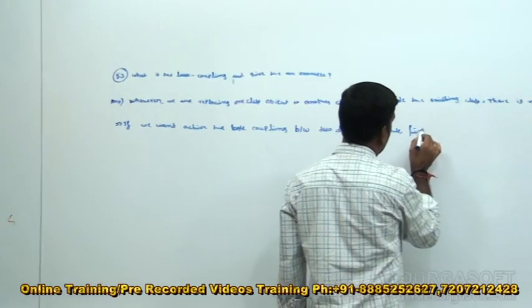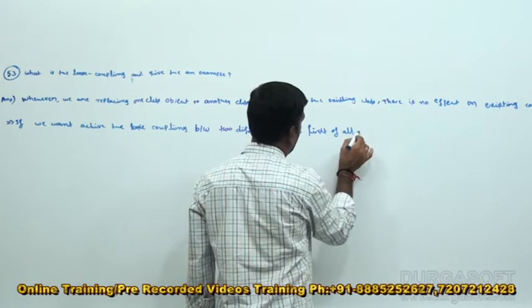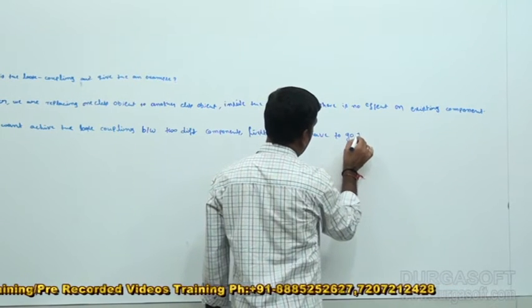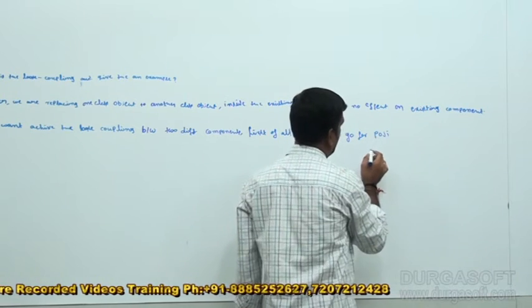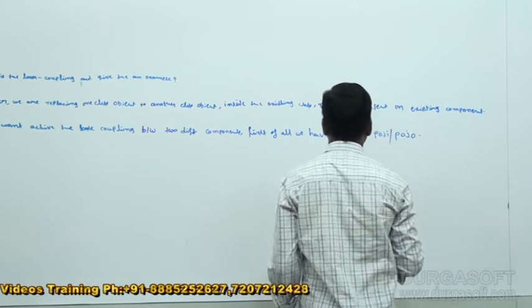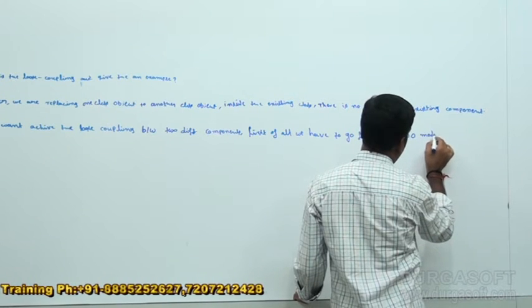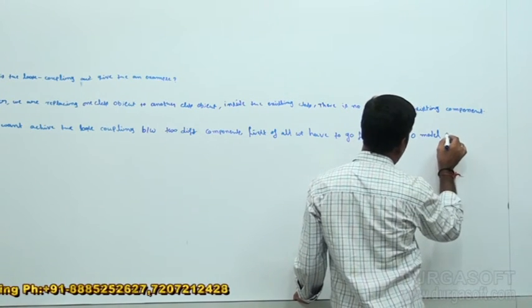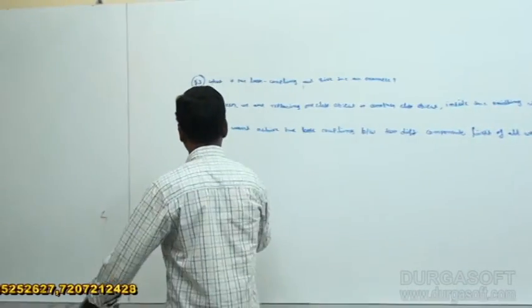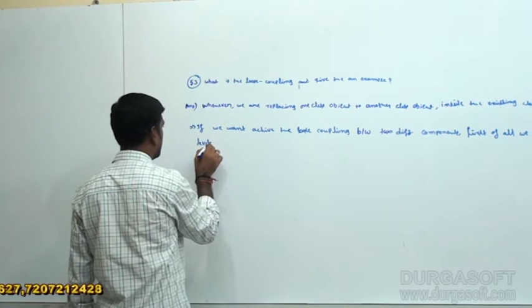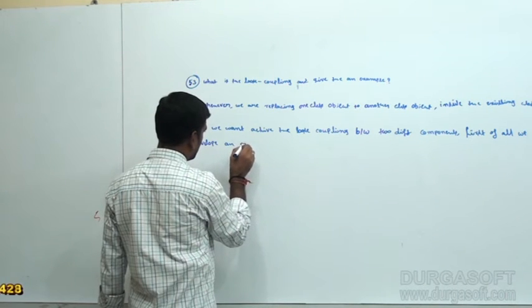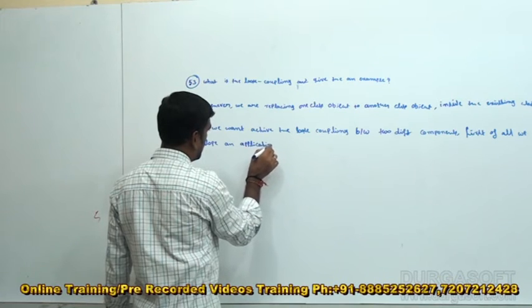first of all, we have to go for the POJI model — Plain Old Java Interface model. Then we can develop an application.